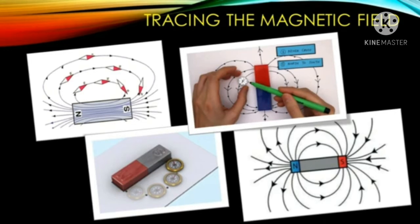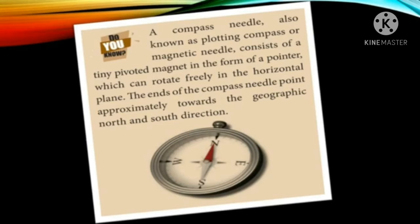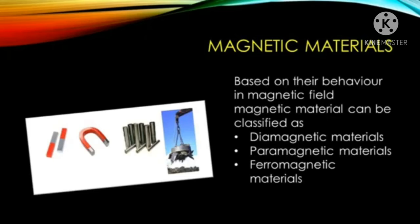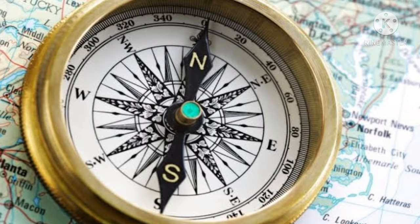This shows that each magnet exhibits its magnetic influence around its specific region. A compass needle, also known as a plotting compass or magnetic needle, consists of a tiny pivoted magnet in the form of a pointer which can rotate freely in the horizontal plane. The ends of the compass needle point approximately towards the geographic north and south direction. In olden days, travelers used to carry a natural magnet called magnetite and thread with them. They used to find directions along their way by suspending the natural magnet with a thread.